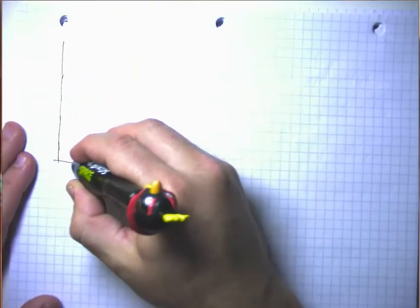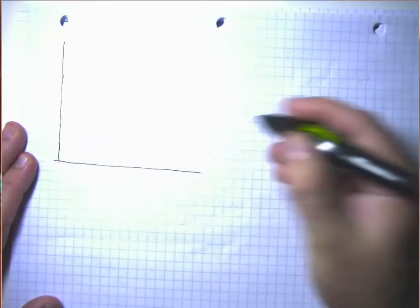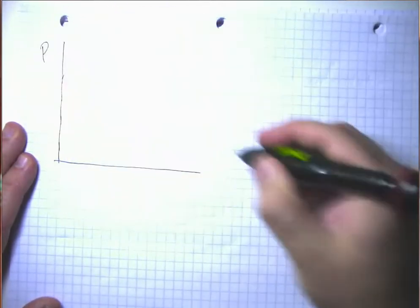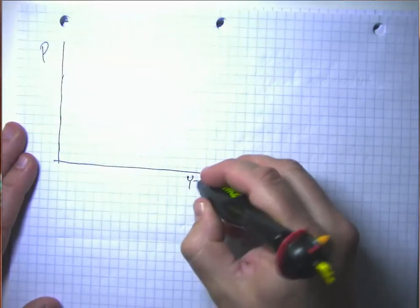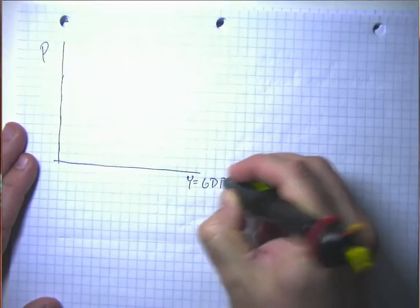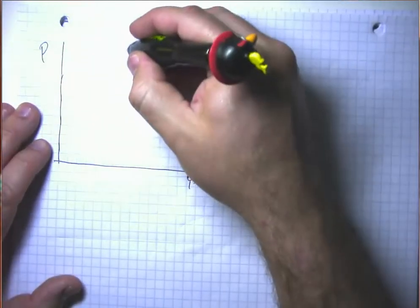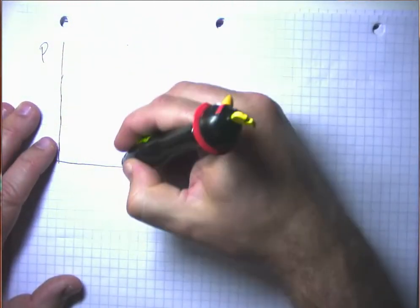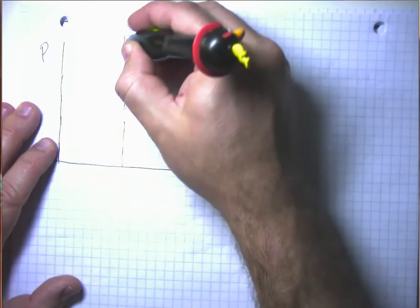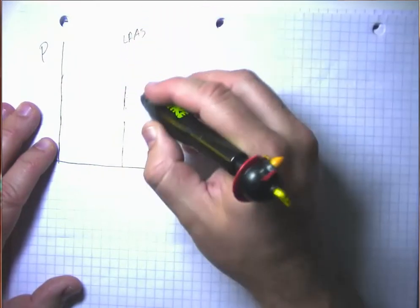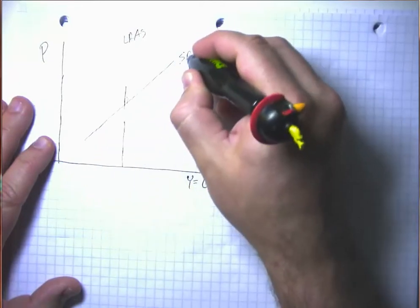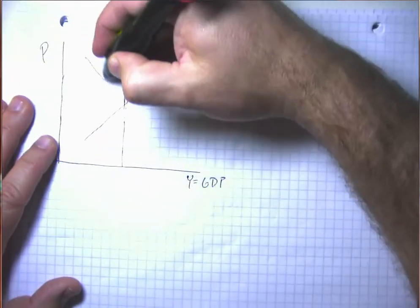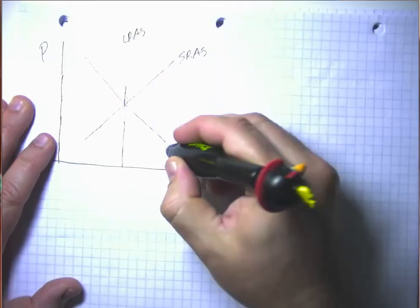So remember, in the aggregate demand, aggregate supply model, we have the overall price level on the vertical axis there and GDP on the horizontal axis here. And let's suppose we think about long-run aggregate supply being at this level, and then we're going to have a short-run aggregate supply curve and an aggregate demand curve.